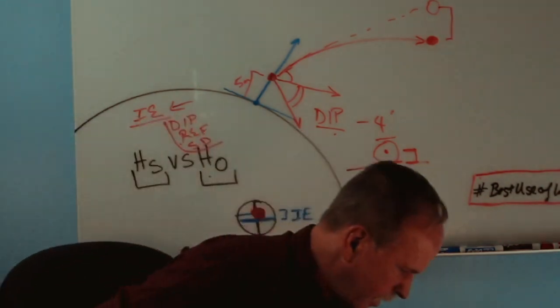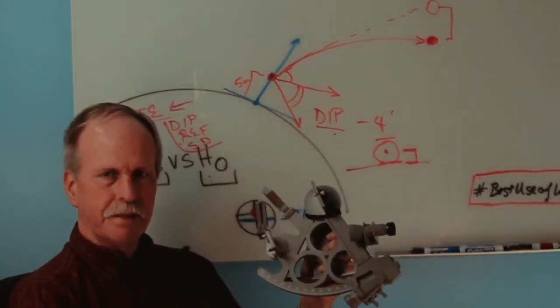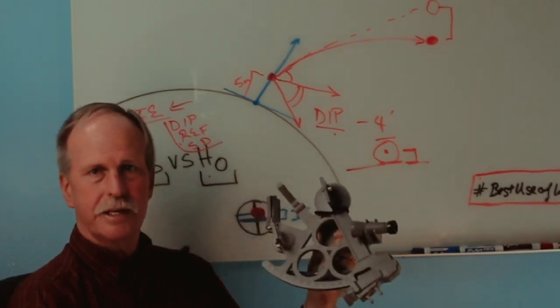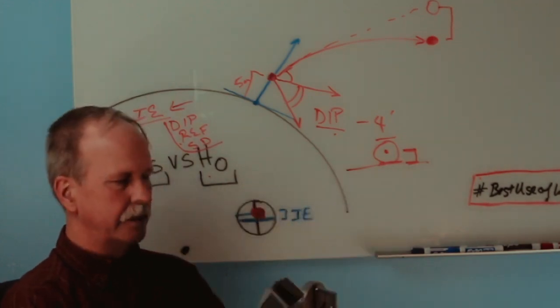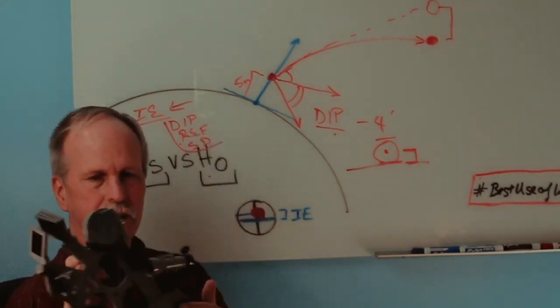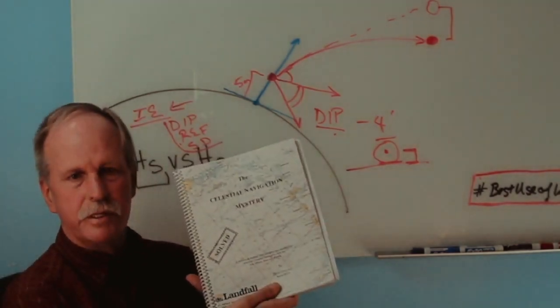Now this Davis Mark 25 sextant is a very good entry level sextant. It's about 250 bucks. It's really not all that expensive. It's made out of plastic. It doesn't rust. It's very durable and it's extremely easy to use. There's even a little button on the handle right here that lights up where your readings are. It also comes with some really good books.